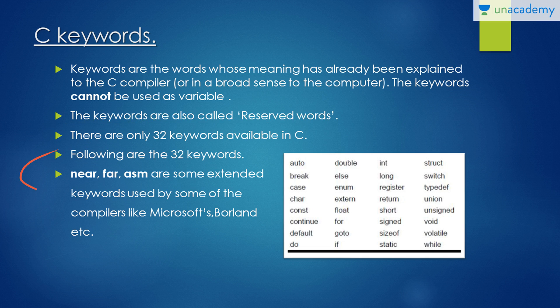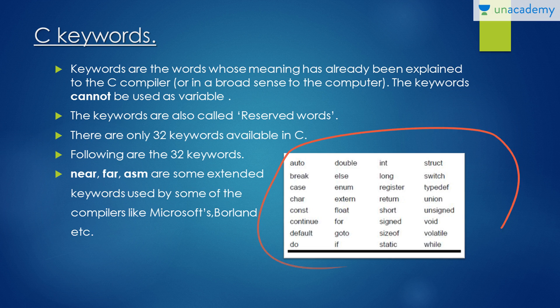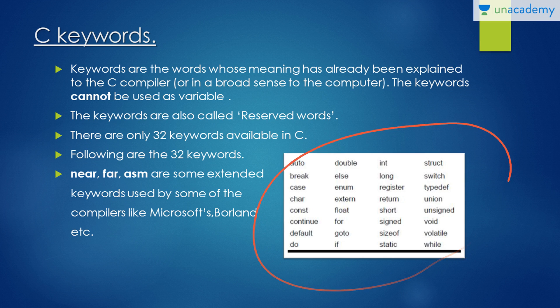One thing I wanted to share: 'near', 'far', and 'asm' are some extended keywords used by some compilers like Microsoft's and the upgradable version of Dev-C++. As you can see here, these are the 32 keywords available in C programming today. Thank you for watching — if you have any queries please let me know so I can clarify. Thanks for watching.